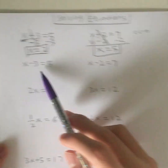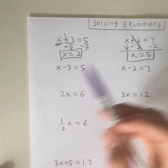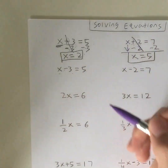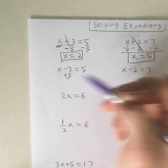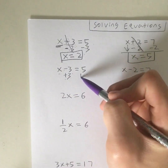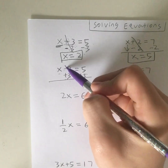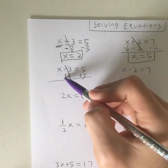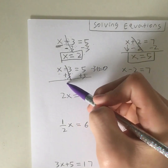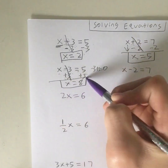Now let's hop into subtraction questions. You're given x minus 3 is equal to 5. How would we solve for x? We do the opposite operation. The opposite of minus is add. So we add 3, and remember to do on the right whatever we do on the left — we also add 3. This gives us x minus 3 plus 3, and the 3s cancel out because negative 3 plus 3 equals 0. That leaves us with x is equal to 5 plus 3, which is 8.